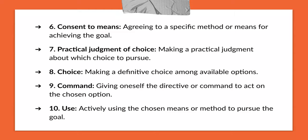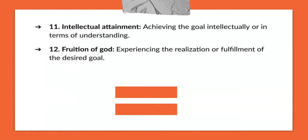The tenth one is use — actively using the chosen means or method to pursue the goal. We've called mom, so now we try to convince her, let her understand that getting an iPhone 15 is very good. We find ways to persuade her so she accepts that we need an iPhone 15 and gives us the money to buy it. We find ways to convince mom — that's actively using the chosen method. The eleventh one is intellectual attainment — achieving the goal intellectually. We use intellectual means to talk to mom until she's decided to give us the money to buy the iPhone 15.